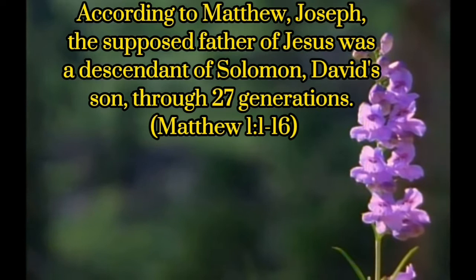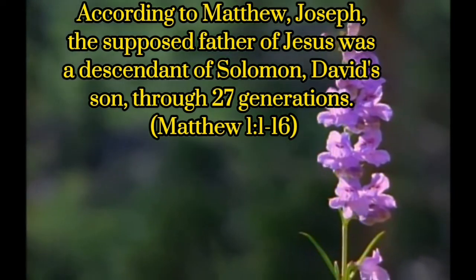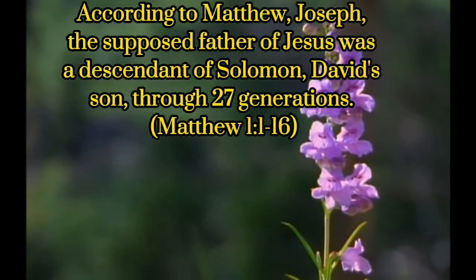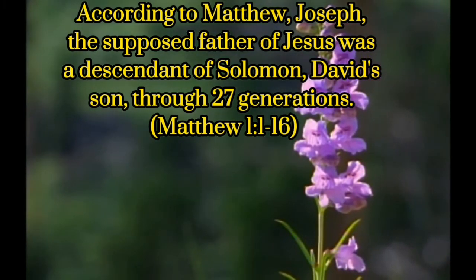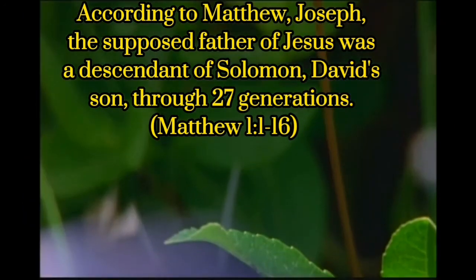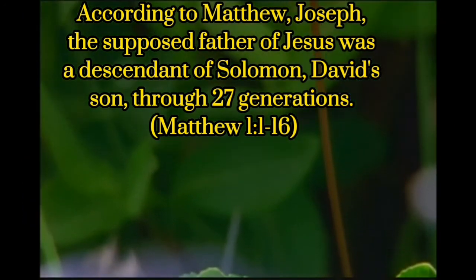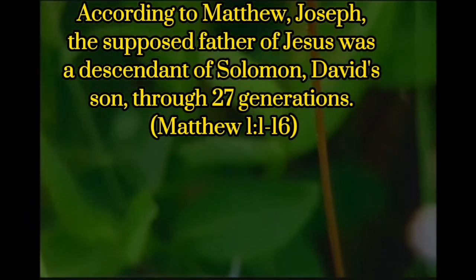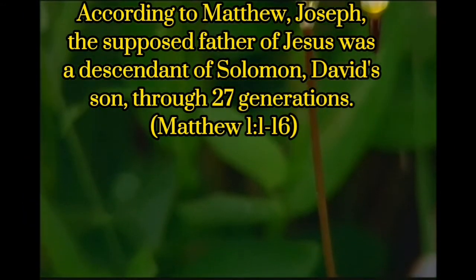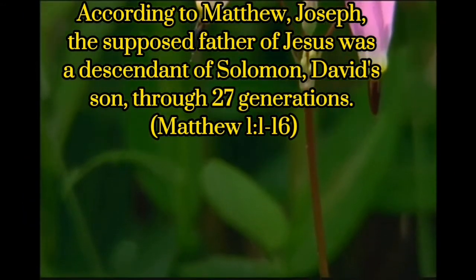According to Matthew, Joseph, the supposed father of Jesus, was a descendant of Solomon, David's son, through 27 generations. Matthew chapter 1, verses 1 to 16.